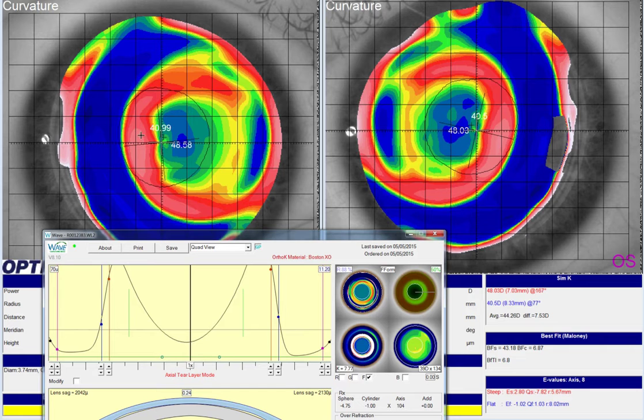There's a lot of molding going on here, and it's possible that this super flat area will cause some unusual decentration of a different lens design.